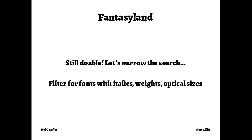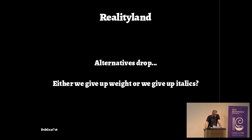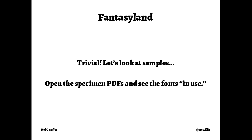But this is just the start of the process. Next, we filter those remaining fonts for variations we need: some italics, some weight — maybe just bold, maybe more. We want optical sizes because we need image captions which are really small, and titles which are really big. Back to reality, the number of alternatives drops obviously. We could start giving things up — use a different font for section titles. That's a possibility, but it changes the discussion too much, so we'll keep searching for the perfect font.